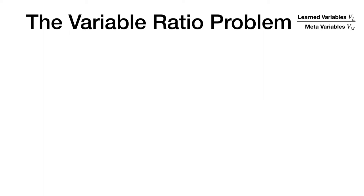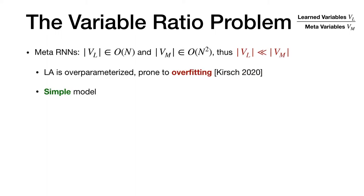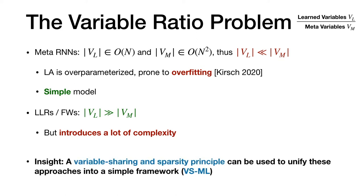At this point, meta-RNNs seem much simpler than fast weights and learning rules. There is a problem though. Meta-RNs have a very bad variable ratio. So what do I mean by variable ratio? An RNN has O of n activations and O of n squared weights. Thus, there are only O of n variables available for learning, vl. Whereas O of n squared meta variables, vm, encode the learning algorithm. And this makes the learning algorithm overparameterized and prone to overfitting, as I demonstrated in meta-general. In contrast, learned learning rules and fast weights have a better ratio. There, we only have a single learning rule. And thus, there are only few meta variables which describe the learning algorithm, but many variables for learning. Though remember that these approaches also introduced a lot of complexity. So the question is, can we have the best of both worlds? And the answer is yes. Variable sharing and sparsity can be used to unify learned learning rules, fast weights, and meta-RNs into a simple framework.